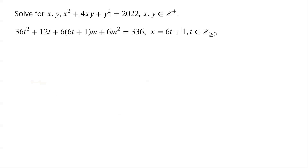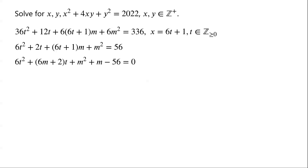Dividing the equation by 6, we have 6t squared plus 2t plus (6t plus 1) times m plus m squared equals 56. Viewing this as a quadratic equation in t, we write: 6t squared plus (6m plus 2) times t plus (m squared plus m minus 56) equals 0.